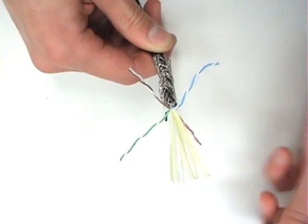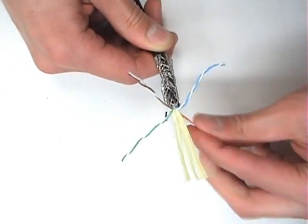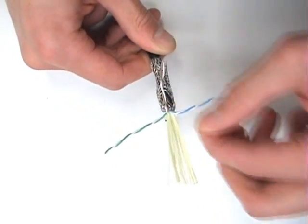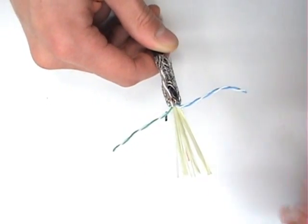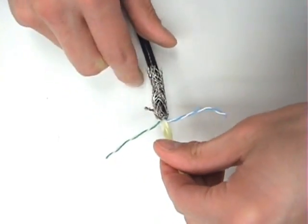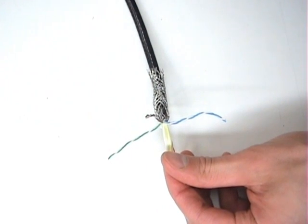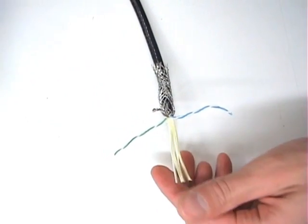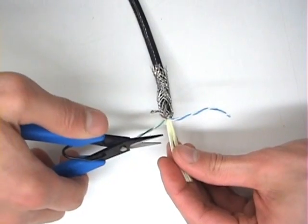Now, the Kevlar reinforcement strands will need to be removed. However, cutting them with a regular pair of shears is a bit difficult. Using a pair of shears that is designed to cut Kevlar makes the job a bit easier.